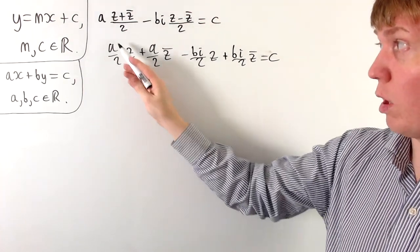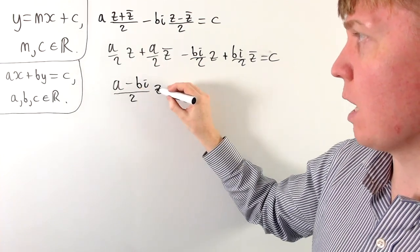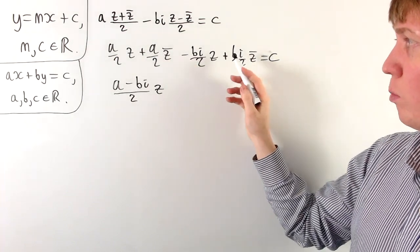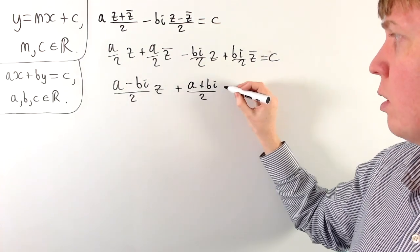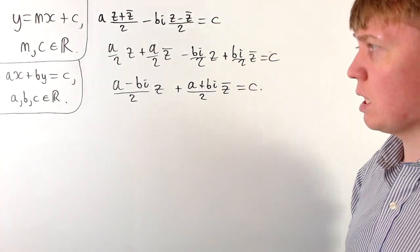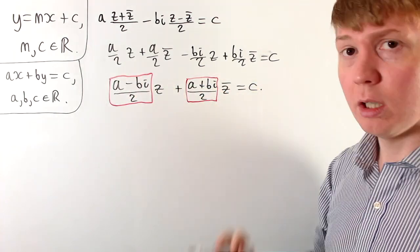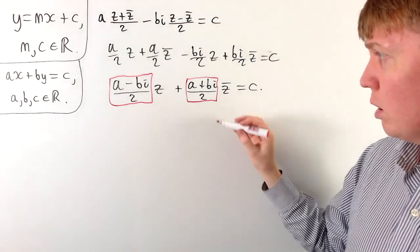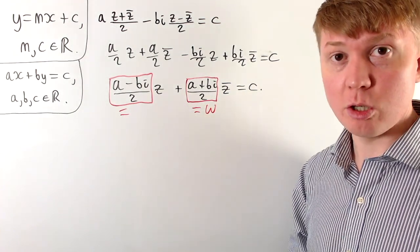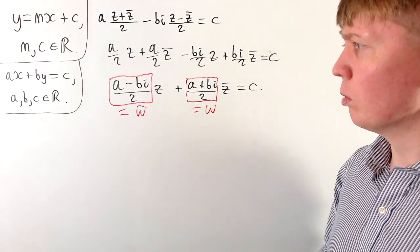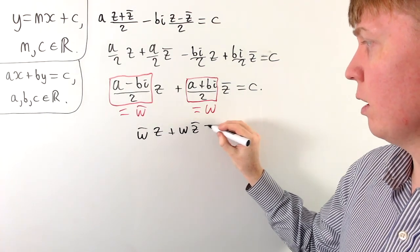Multiplying out and collecting like terms: we get (a/2 − bi/2)·z plus (a/2 + bi/2)·z̄, which equals c. We can write this as (a − bi)/2 times z, plus (a + bi)/2 times z̄, equals c. Notice that (a + bi)/2 and (a − bi)/2 are complex conjugates of each other. Introducing a new variable w = (a + bi)/2, so that (a − bi)/2 is just w̄, the whole equation becomes w̄·z + w·z̄ = c.